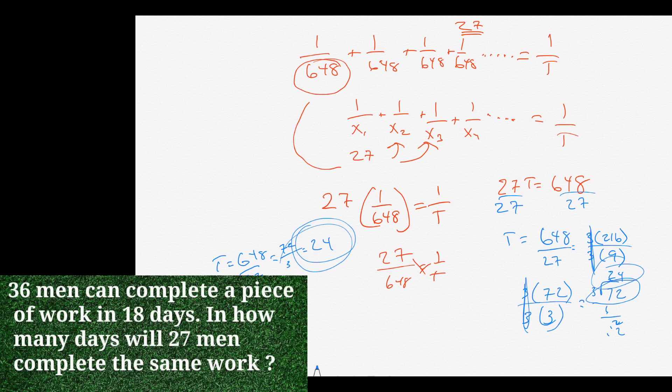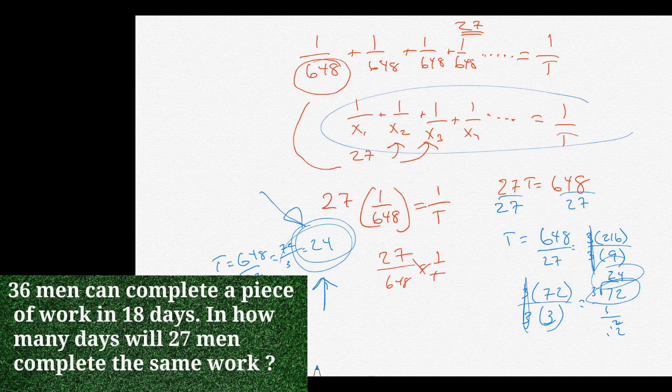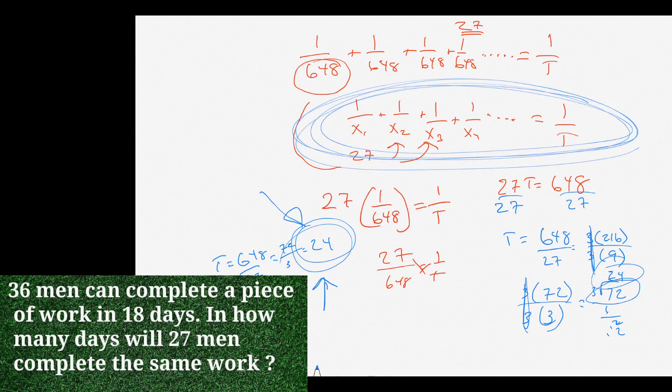It would take them 24 days to do that project. And it makes sense. I mean, 36 men took 18 days. So, obviously, 27 men are going to take longer because they're less than 36 men. And we're assuming these men are all machines, they're all exactly the same. So, it would take them 24 days. The most important thing about this formula is right here. You've got to remember this thing.